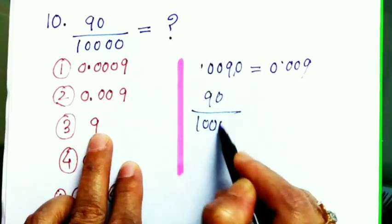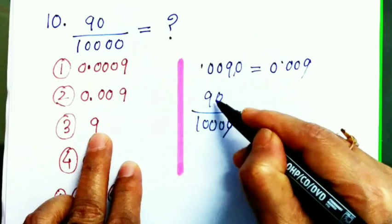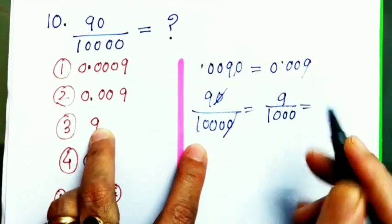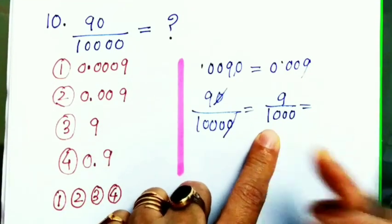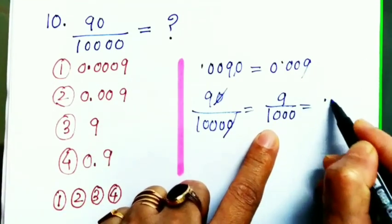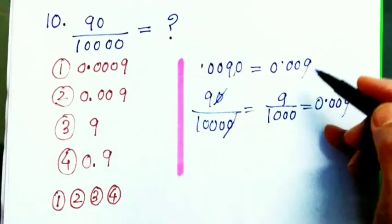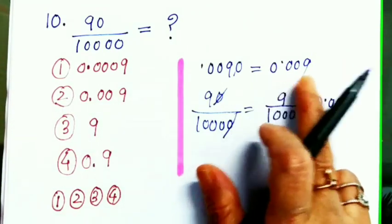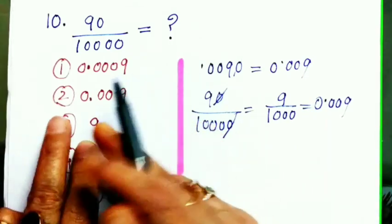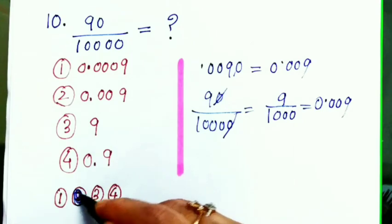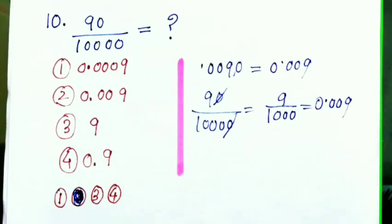And if we simplify before doing the sum, then also we will get 90 divided by - I'll cut this one, then it will become 9 divided by, and here three zeros are there. As there are three zeros, we'll write the answer like this. So in both the cases, answer becomes 0.009. So our number two is the option, the right option.